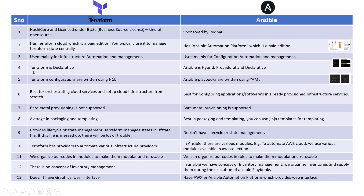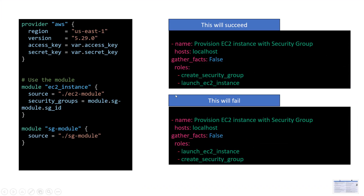Point number four: Terraform is declarative and Ansible is hybrid — both procedural and declarative, depending on how modules are written. Looking at an example Terraform config file for creating an EC2 instance, you can see we specify the provider to interact with AWS, provide AWS key and secret key from variables, and use modules. Here there are two modules: one for the EC2 instance and one for a security group. Logically, the security group must be created before the EC2 instance.